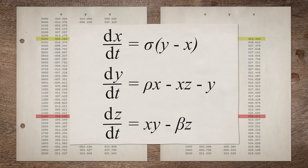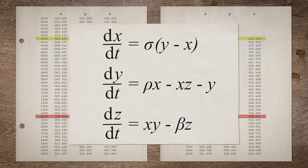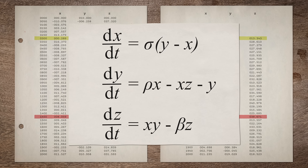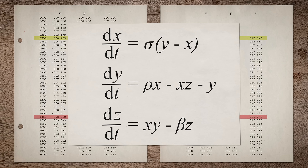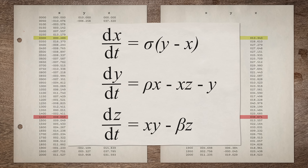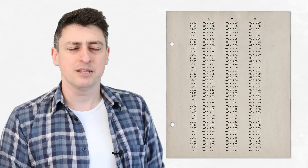And this shouldn't have been possible. There was no randomness in the equations. If you start with the same values, you should get the same results every time. At first, Lorenz thought this must have been a problem with the computer — after all, this was the early days of digital computers and mechanical problems did happen. But he realized that that wasn't the case.